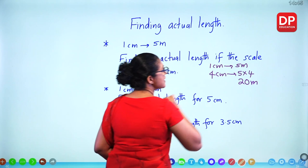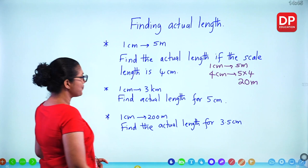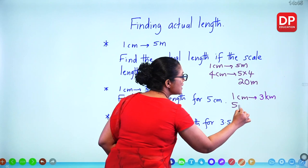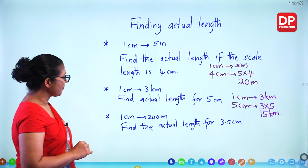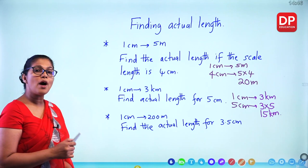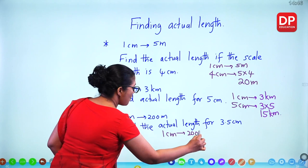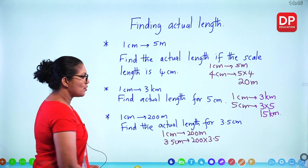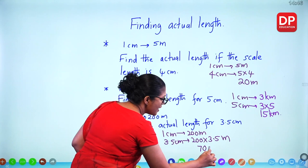Another example: 1 cm represents 3 kilometres. For 5 centimetres — 3 times 5 gives 15 kilometres. Another: 1 cm represents 200 metres. For 3.5 centimetres — multiply 200 by 3.5. 3.5 times 200: 3.5 times 2 is 7, with two zeros, giving 700 metres.